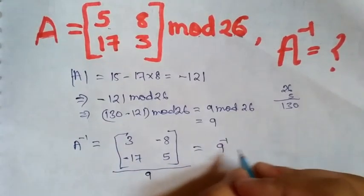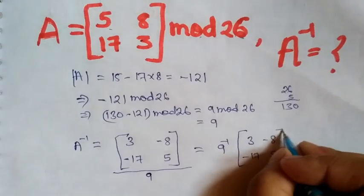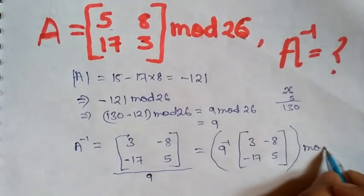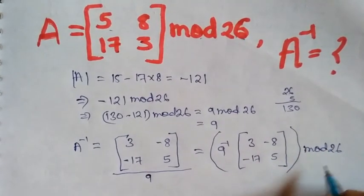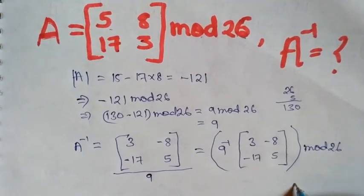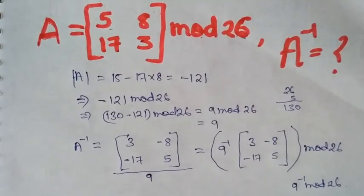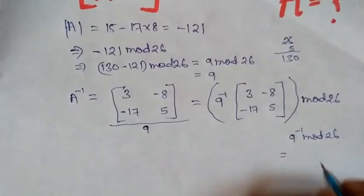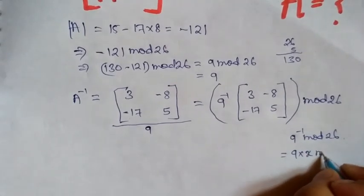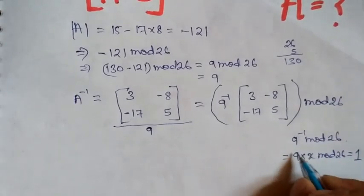A inverse equals 1 over 9 times the matrix 3, minus 8, minus 17, and 5. Now we have to calculate mod of this number 26. First we calculate 9 inverse mod 26, which can be written as 9 into something, let's say x, 9 into x mod 26 must be 1. So we have to find the value of x.